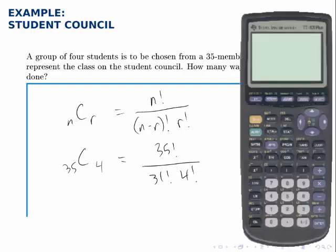Going to the calculator, we type in 35, find the math probability menu, select number 4 for the factorial, divided by, and then I want to divide by the product of 31 factorial and 4 factorial.